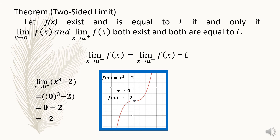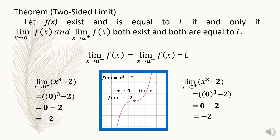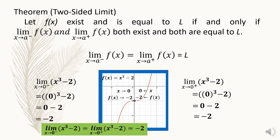On the right side, the right-hand limit of x³ − 2 as x approaches 0 from the right: substitute x = 0 and simplify — the limit is also −2. Since the left-hand limit equals the right-hand limit, both equal −2. Therefore, we can say that the limit exists, and the limit of x³ − 2 as x approaches 0 is −2.